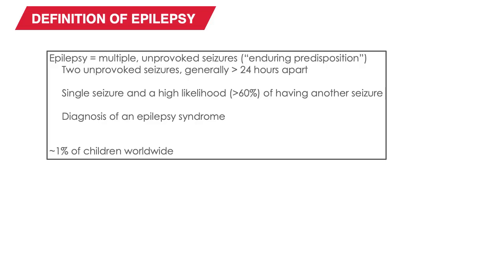As this definition implies, there are outward components to seizures that we can see and detect with our eyes, and inward components that are due to abnormal activity of the brain. Both of these components are important to understand what's happening during an absence seizure. An epileptic brain is one that has an enduring predisposition to have unprovoked seizures. Formal criteria for epilepsy include having multiple unprovoked seizures, or a single seizure but with a very high likelihood of having another in the future. In some cases, seizures may occur along with other features that add up to an epilepsy syndrome, and childhood absence epilepsy is one of these epilepsy syndromes.